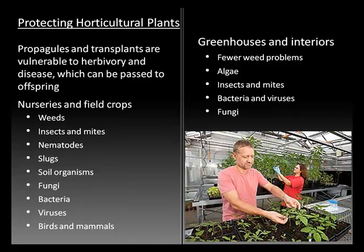Here is a list of things that our propagules and transplants will be vulnerable to. Some of these diseases can be passed on to offspring. In nurseries and field crops, there's the problem of weeds, insects and mites, nematodes (which are microscopic soil organisms), slugs, a variety of other soil organisms including fungi, bacteria, and viruses, and various birds and mammals who also can cause significant damage to our crops.